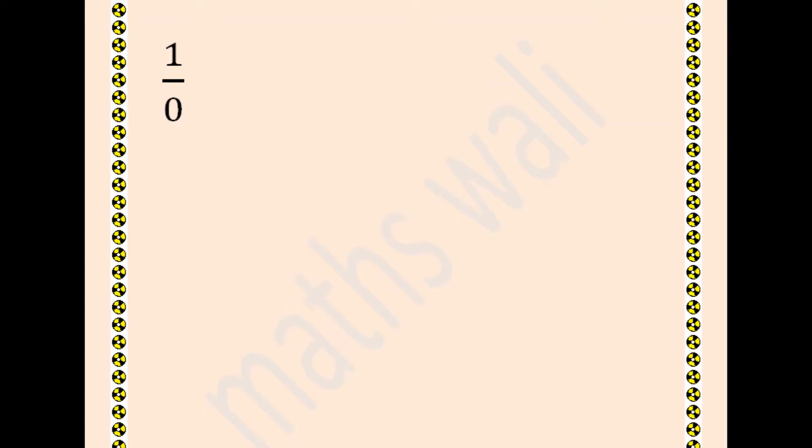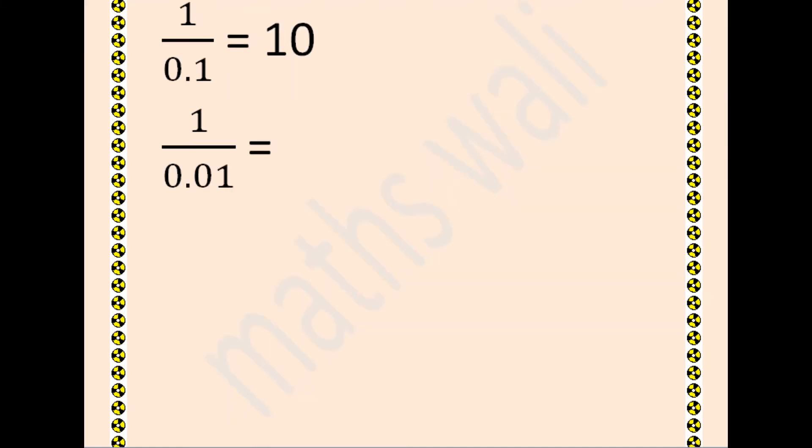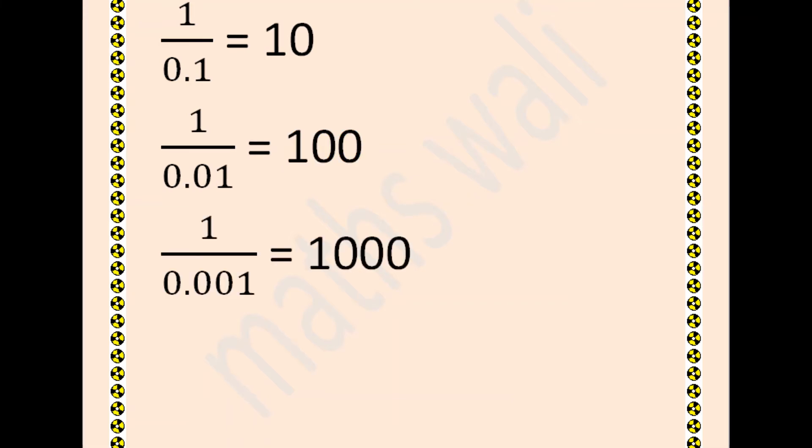Let's see why. Now we take 0 from 0, so this is 1 upon 0.1, and we know that its value is equal to 10. Now we take 0 from 0 which is 0.01, and 1 upon 0.01 is nothing but 100. Similarly, if we take 0.001, we will get 1000.